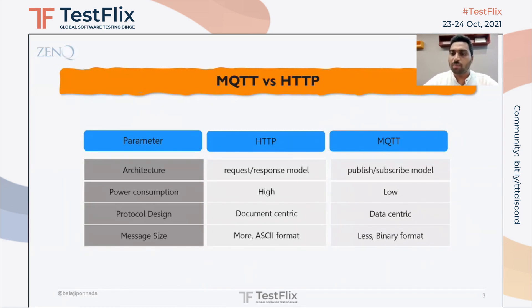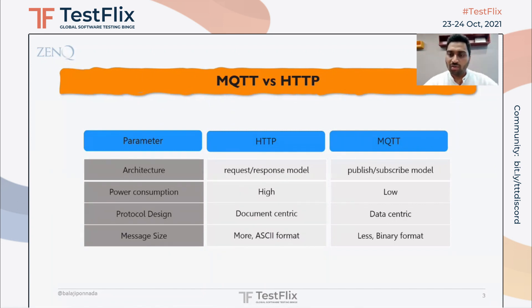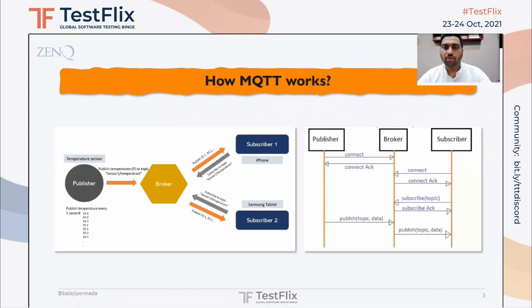MQTT works on a publish-subscribe model, which is a more asynchronous way of data transfer. This means you do not need a continuous or live connection between the publisher and the subscriber for data to be transferred. Due to this asynchronous nature, the power consumption will be low. This protocol is also built to transfer binary format or smaller amounts of data. Now let's see how MQTT works.